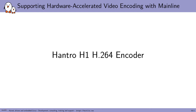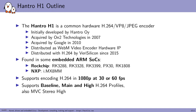So now we're going to look at the Hantro H1 H.264 encoder hardware. The Hantro H1 is a common hardware H.264 encoder. It can also do VP8 and JPEG. It is found in a few embedded ARM SoCs — many Rockchip chips use the Hantro H1 on many of their SoCs. It's also found on NXP's IMX8MM. Depending on the version, it can do 1080p at 30 or 60 frames per second. With lots of H.264 profiles including high and main. It can also do MVC stereo, so it can encode 3D.